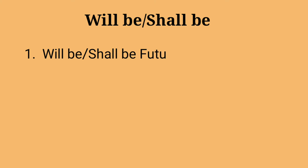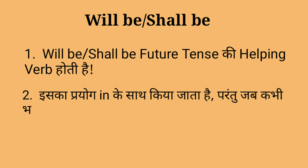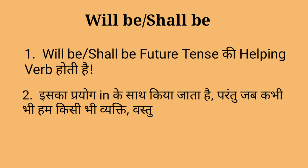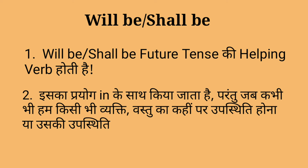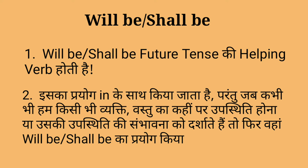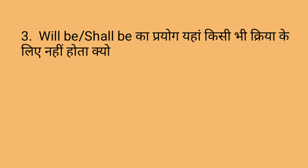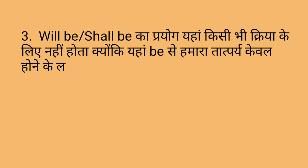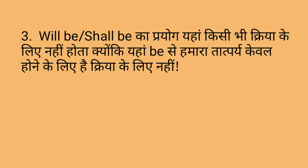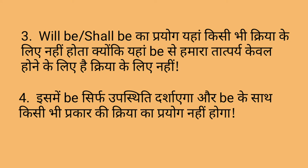Will be, shall be ka priyog — will be, shall be future tense ki helping verb hoti hai. Iska priyog in ke saath kiya jata hai. Will be, shall be ka priyog yaha kisi bhi kriya ke liye nahi hota, kyunki yaha 'be' se hamara tatparya kevel hone ke liye hai, kriya ke liye nahi. Ismein 'be' sirf upasthiti darshaega aur 'be' ke saath kisi bhi prakaar ki kriya ka priyog nahi hoga.